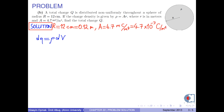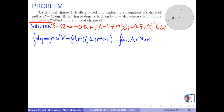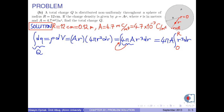dQ equals rho times dV. We are given rho as a times r, and dV is 4π r² dr. So dQ equals 4π times a times r³ dr. If we take the integral of both sides, the left-hand side — the integral of dQ — becomes the total charge. On the right-hand side, since 4π and a are constant, they can be taken outside the integral, leaving the integral of r³ with endpoints 0 and capital R.